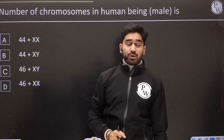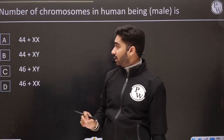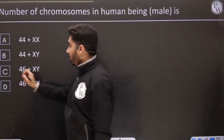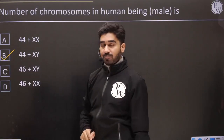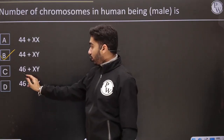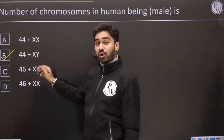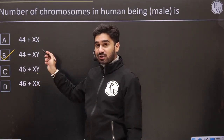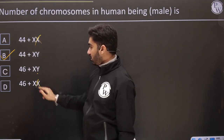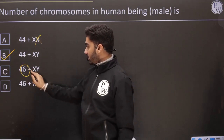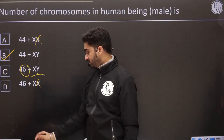Number of chromosomes in a human male — we know it is 44 + XY, so 46 total with XY. 46 without XY would be incorrect. If there were 48 chromosomes, that would also be wrong. So 46 with XY is correct.